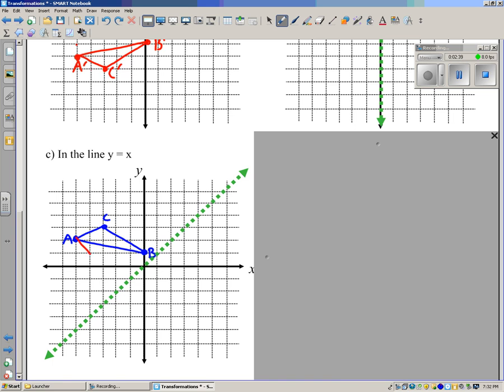Here's what I mean by that. A is one, two, three and a half boxes away from the line of reflection. So you're going to have to count half a box to get here. And then three more boxes. One, two, three. And where I ended up there is going to be where A prime is.